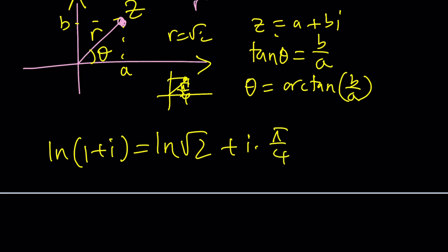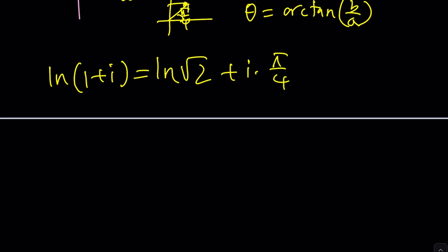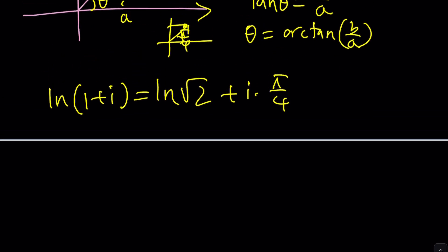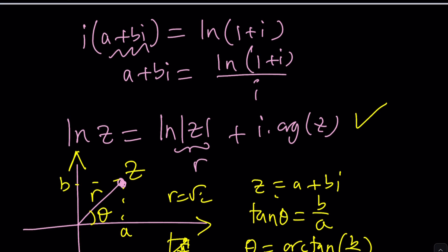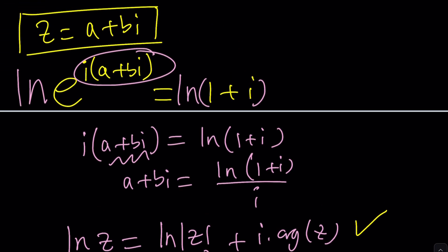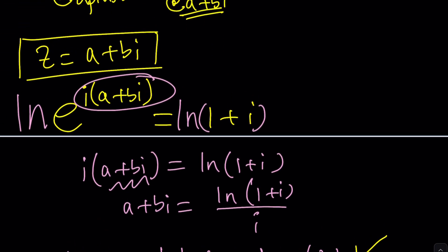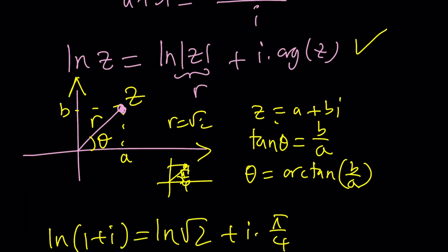So now I have the following that I can plug in, right? But I have to divide by i and then get to the result from there. Make sense? Okay, cool.